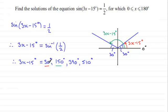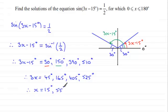So when I add 15 degrees to each of these, it's going to leave me with 3x. So 3x would equal 45 degrees. 150 plus 15 is 165 degrees. 390 plus 15 is 405 degrees. And then 510 plus 15 is 525 degrees. Now I divide back by 3, and I end up with x equaling 15 degrees, 55 degrees, 135 degrees, and 175 degrees.